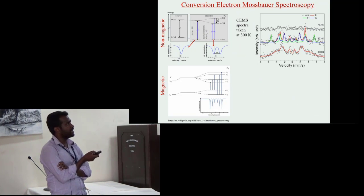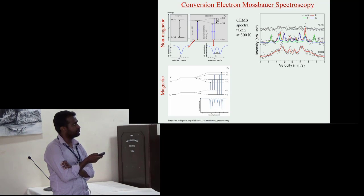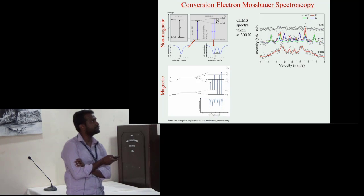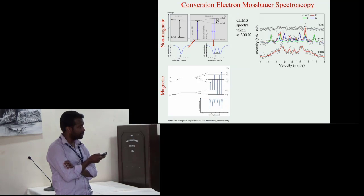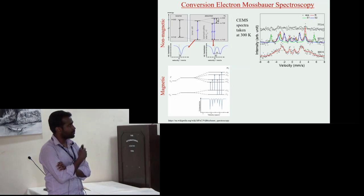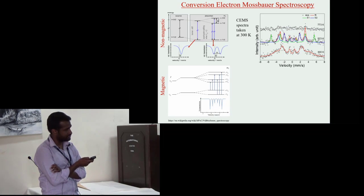To investigate magnetic property we have carried out conversion electron Mössbauer spectroscopy. This technique is very sensitive to local magnetic structure and depending on sample properties like magnetic, non-magnetic, this shows characteristic spectra.